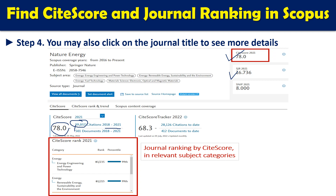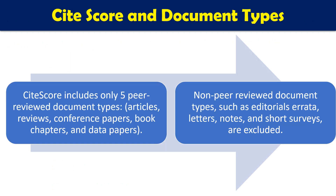CiteScore Tracker is calculated every month. For example, one calculated on 5th July showed a value of 68.3. You can also get information from the CiteScore ranking. CiteScore includes only five peer-reviewed document types: articles, reviews, conference papers, book chapters, and data papers. Non-peer-reviewed document types such as editorials, errata, letters, notes, or research surveys are excluded from CiteScore calculations.